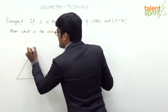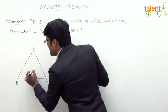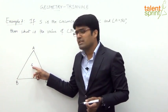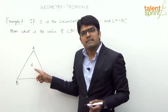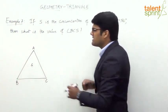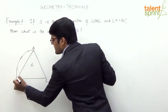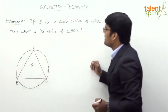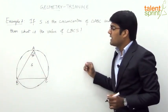Let us consider a triangle ABC with vertices A, B, and C, and S as the circumcenter. The circumcenter is the center of the circle that circumscribes triangle ABC — the circle that passes through all three vertices. Let us draw the circumcircle with S as the center, passing through A, B, and C. We also know that angle A is 50 degrees.